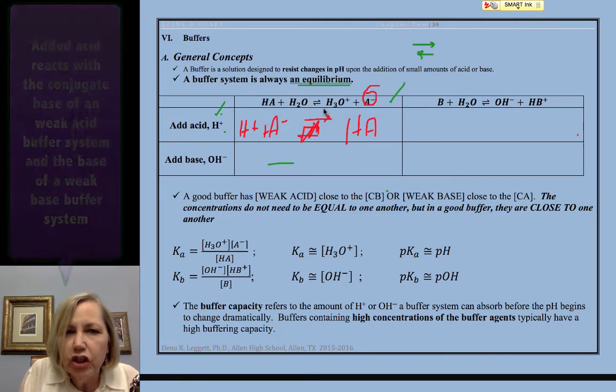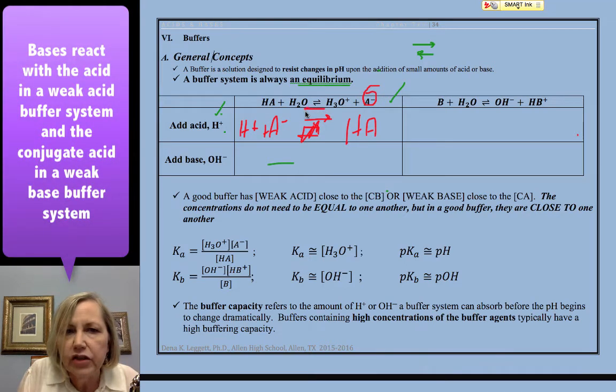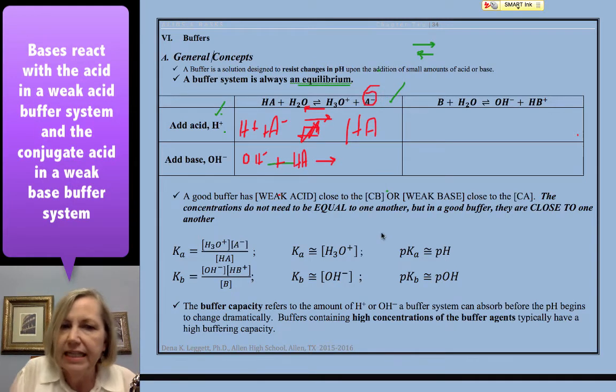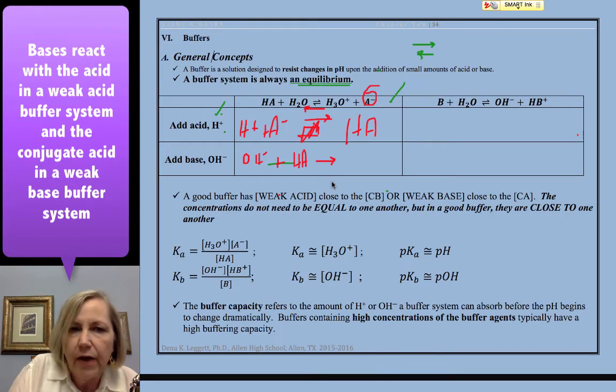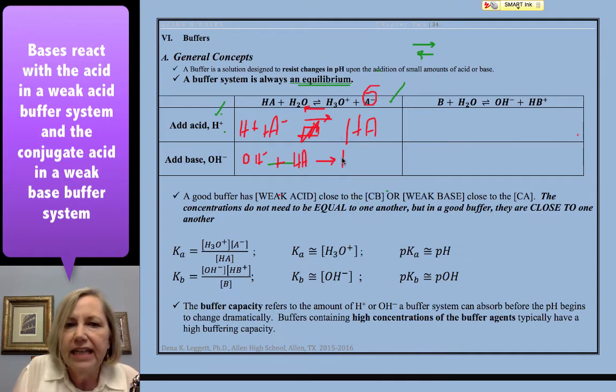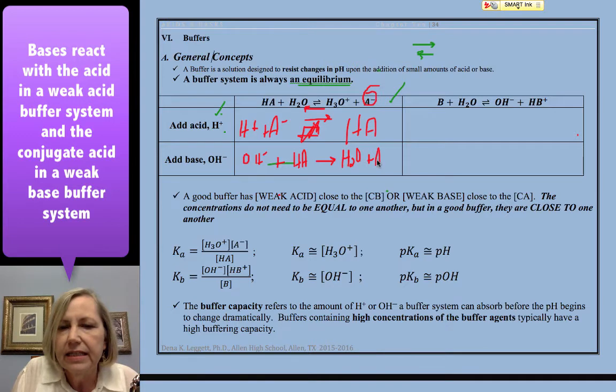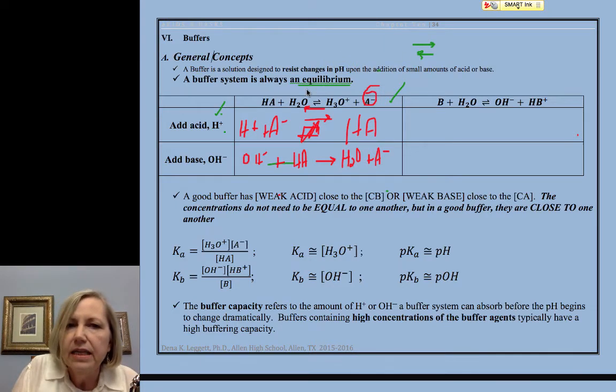In other words, it shifts our equilibrium in this direction towards the reactant side. If I added a base, bases react with acids. So my hydroxide is going to react with my acid. Any acid plus any base neutralization is a stoichiometry until the limiting runs out. And in this case, I'm going to get water plus A-. In other words, it responds by shifting the equilibrium in the forward direction.